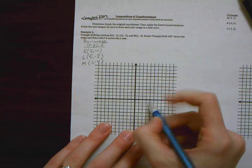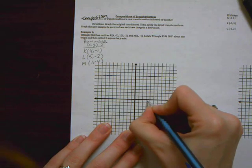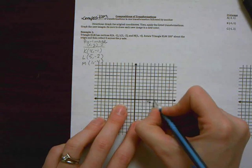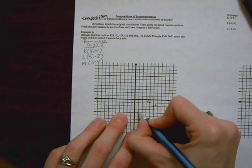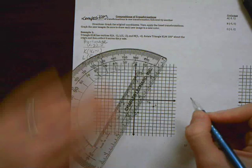All right. So starting at the origin, over 4, down 1 is my K. Over 5, down 2 is my L. And over 1, down 4 is my M.